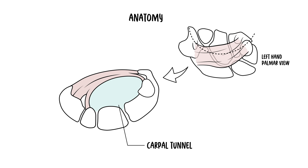Talking about the borders: the tunnel's floor and sides are formed by the carpal bones arranged in a concave shape known as the deep carpal arch. The roof is made by the flexor retinaculum, a thick connective tissue band forming the arch into a closed tunnel.